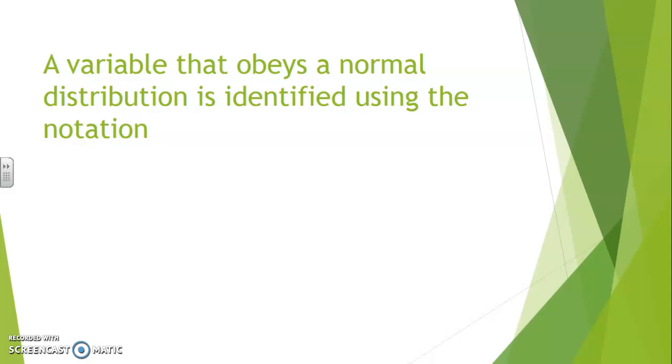A variable that obeys a normal distribution is identified by the label X follows N for normal distribution, with mu and sigma as parameters.